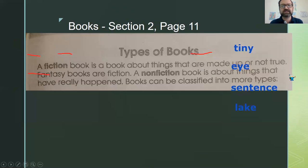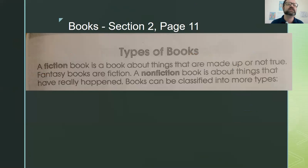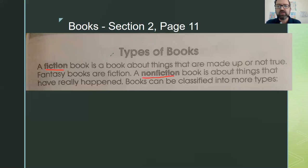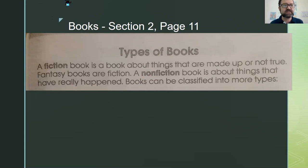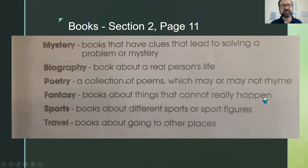Those are analogies — ways to compare things. Now I'm going to go over some different types of books. I'm on page 11. A fiction book is about things that are made up or not true — fantasy books are fiction. A non-fiction book is about things that have really happened. Books can be classified into more types, called genres.